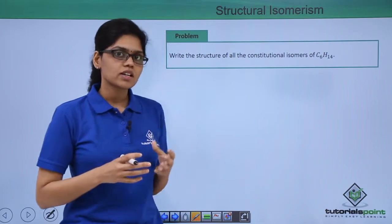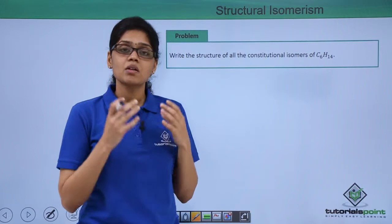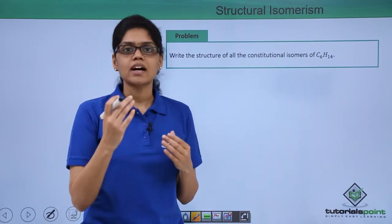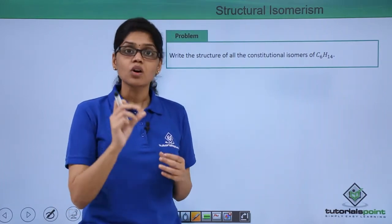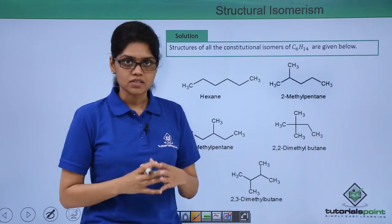We know that structural isomerism refers to compounds that have the same molecular formula but differ in the way the atoms are linked with each other, or there is a difference in the connectivity of bonds. Based on that, let's figure out all the structures.